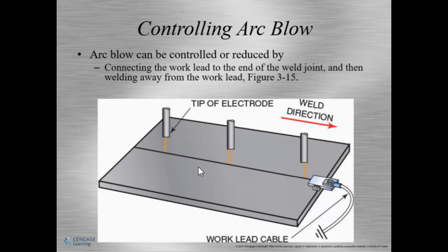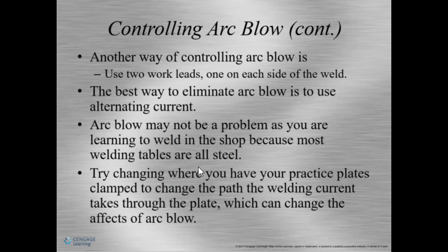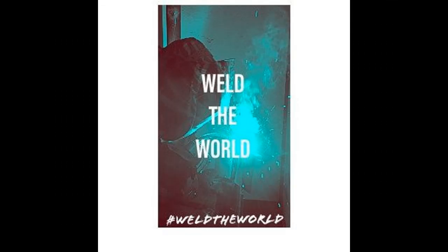There are several remedies to control arc blow. The first is connecting the worklead — another term for ground — to the end of the weld joint and welding away from the ground. Another way is to use two grounds and put them on both sides of the weld. You can also coil your ground around the weld, and if possible you may have to reduce the current. One of the best ways to eliminate arc blow is to use alternating current, though if you're welding structural material, especially on a building, you may not be able to use AC due to code or standard. Thank you for watching part two of SMAW — weld the world.